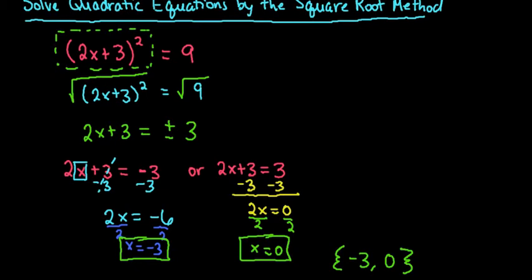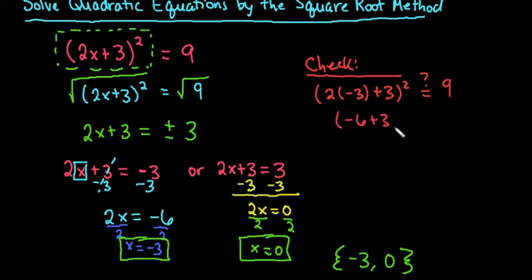Don't forget to check, and I should have checked it before I wrote it in set notation. When we check this, we would just plug it back into our original question. So we would do two times negative three plus three squared, and ask ourselves, does this equal nine? If we simplify this, we end up with negative six plus three squared equals nine, and we get negative three squared equals nine, which is true. So we know that x equals negative three works.